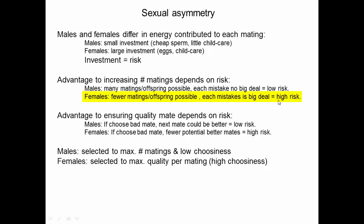If a female mates with a male of very poor quality, she can end up with offspring that aren't as good. Or if she mates with a male of the wrong species, she can end up with offspring that are sterile. So because females incur a higher risk, there's not really a big advantage for females to increasing the number of matings, since those matings are more risky.